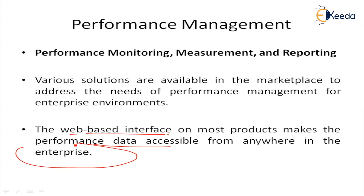Web page interfaces on most products make performance data accessible from anywhere in the enterprise. Response time can be measured between source and destination or from each hop-to-hop path along the network. SNMP traps can be configured to alert management consoles if the response time exceeds a predefined threshold. HTTP service performance is defined by the sum of DNS lookup, TCP connection, HTTP transactions, and jitter control. VoIP traffic and the response time between endpoints for a specific Quality of Service (QoS) are also defined, along with IP-based services for network performance.